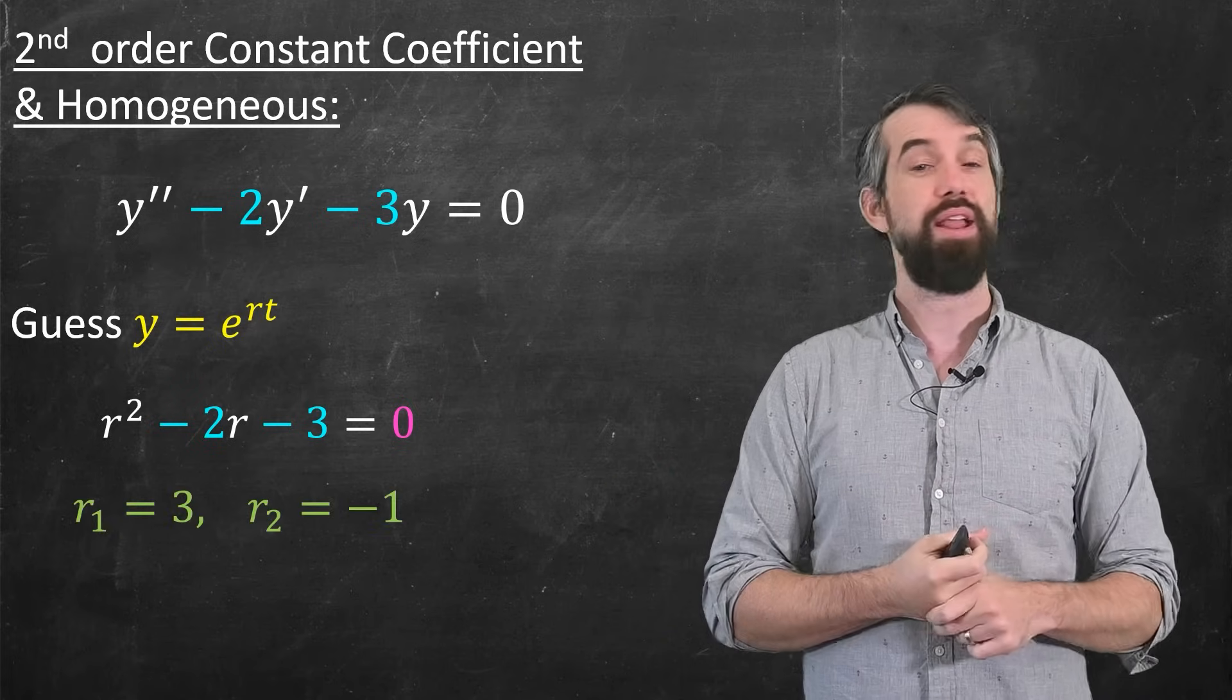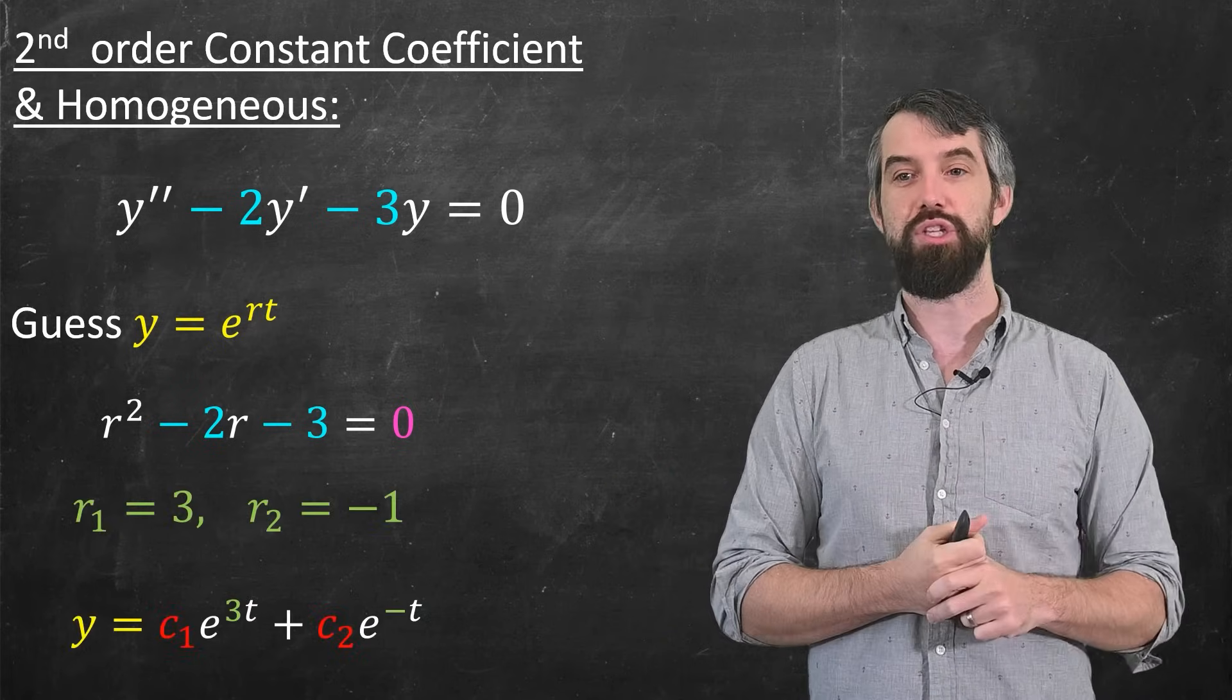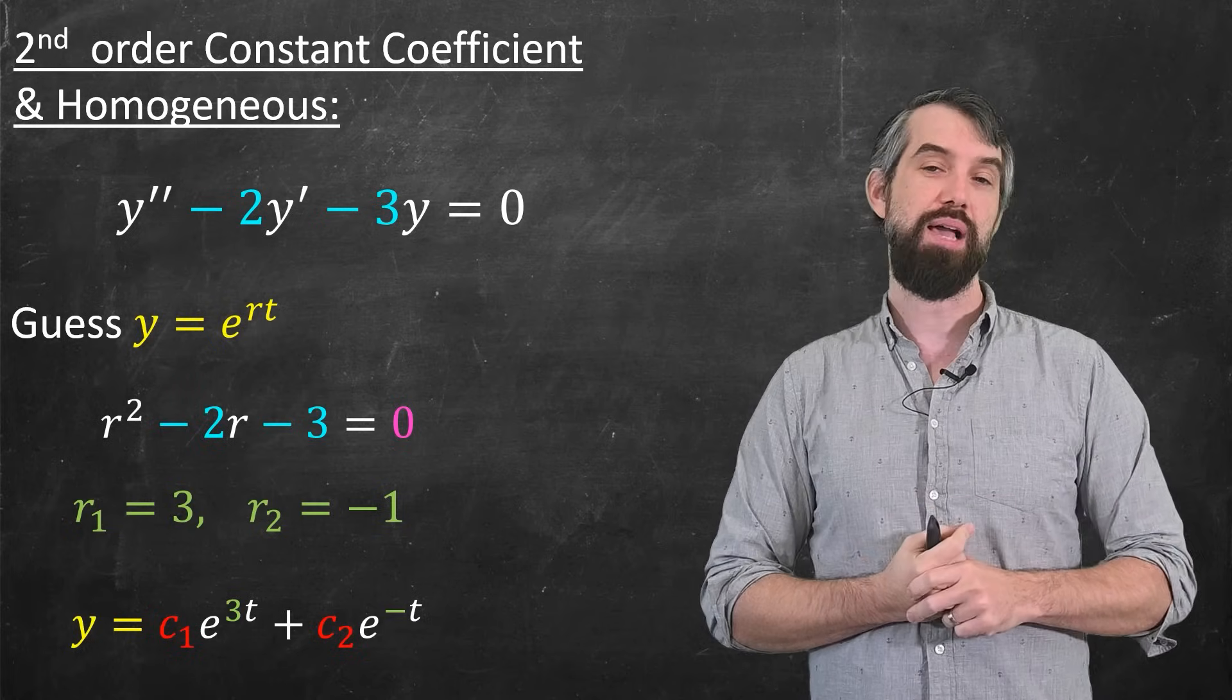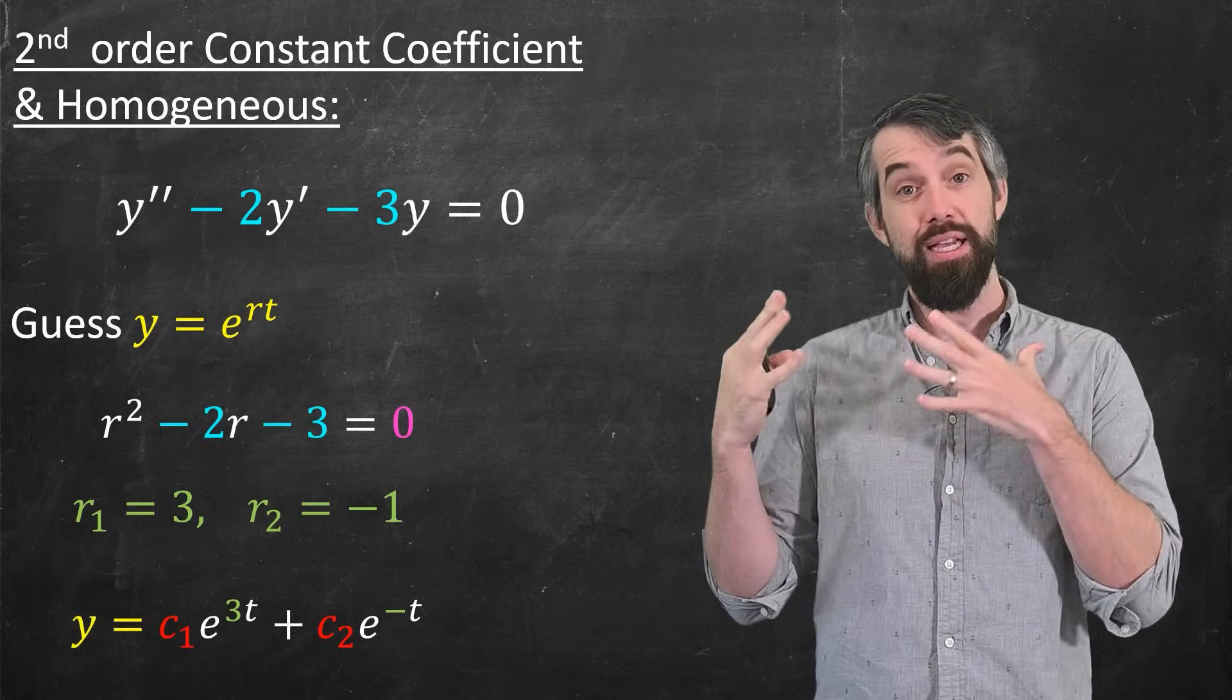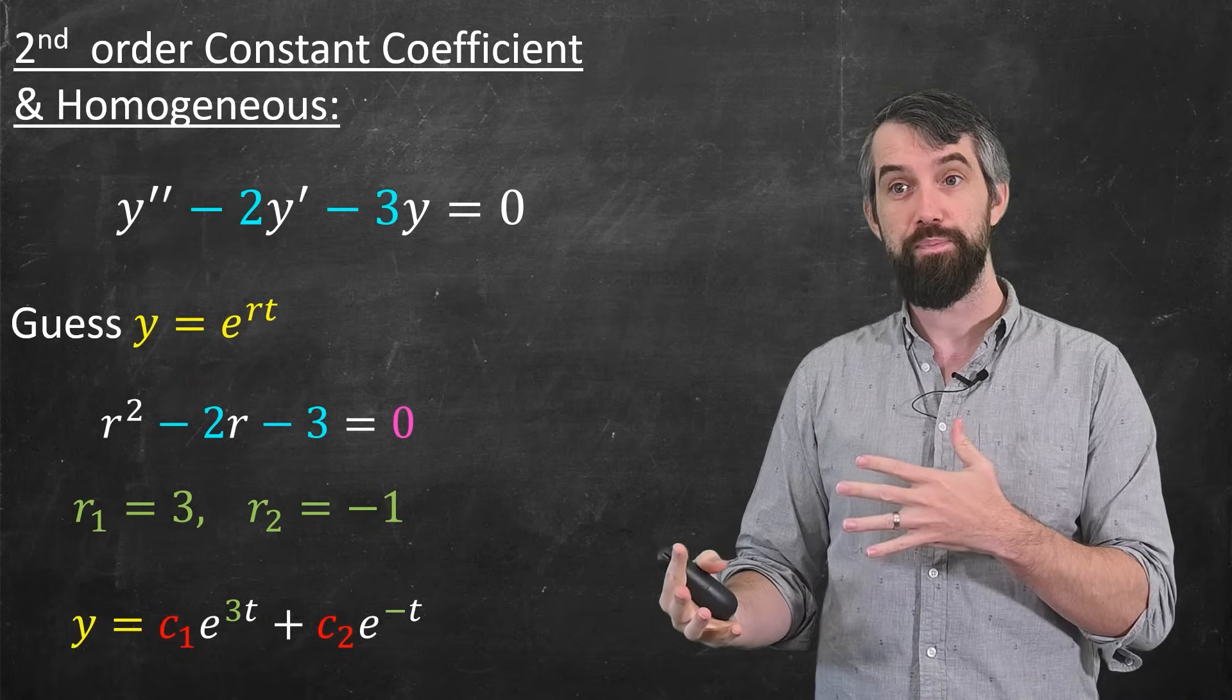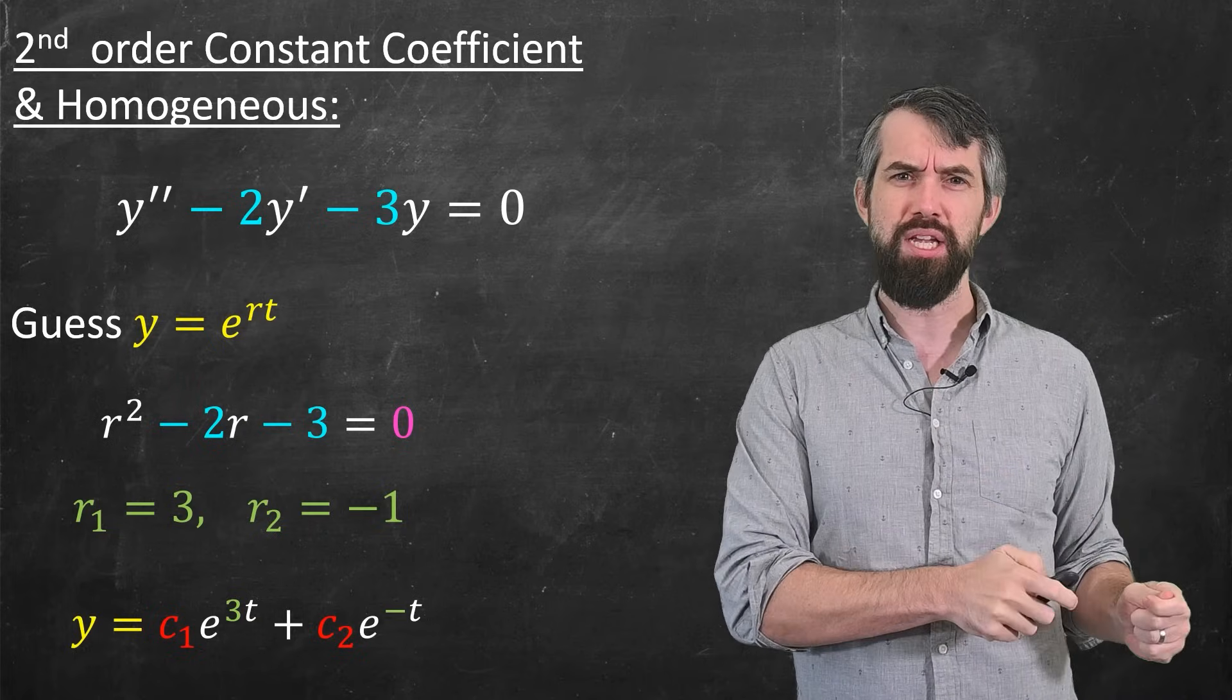And this, in the second order case gives you a quadratic. You can solve that quadratic and get a couple different roots. And the standard guess that you give is c1 e to the first root times t and c2 e to the second root times t.